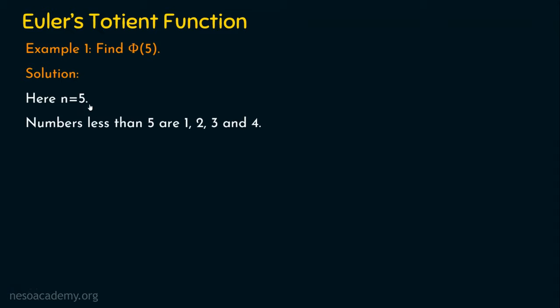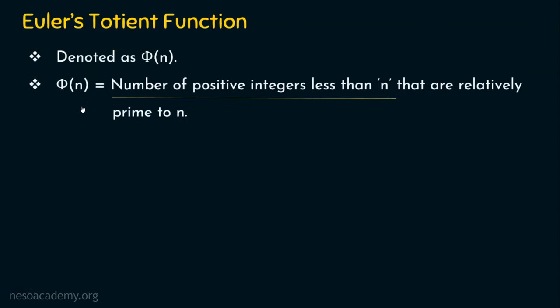Out of these numbers, how many are relatively prime to n? We need to check if 1 and 5, 2 and 5, 3 and 5, and 4 and 5 are relatively prime. We focus only on positive integers less than n, so we ignore 0 and all negative numbers, as the definition specifies positive integers less than n that are relatively prime to n.